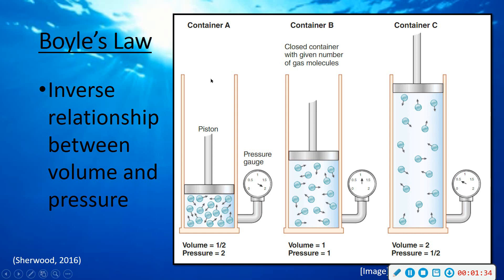I'm going to start with container B in my image. Container B has a piston that squeezes the liquid, affecting the volume. The center container represents volume and pressure as equal — both at one. Moving to container A, the volume has been cut in half. With the same amount of molecules moving at the same speed, meaning same temperature, they now have half the room, so the pressure inside has doubled.